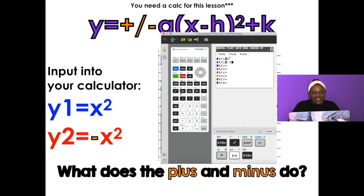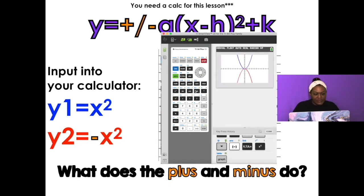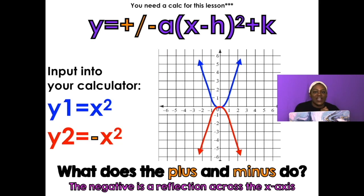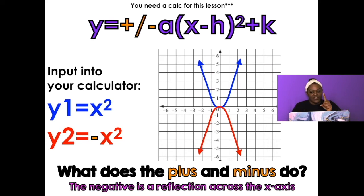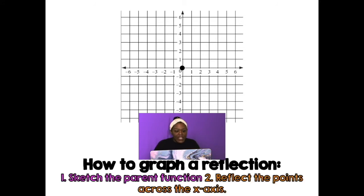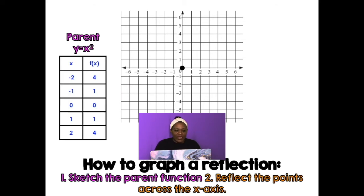We'll notice that the parent function is a happy face, and when I put a negative in front of it, it becomes a frowny face. So I can safely assume that anytime I add a negative in front of a function, it's going to make a reflection across the x-axis. Just like when I look in the mirror — that's what is happening, but over the x-axis specifically. So let's talk about tables now.